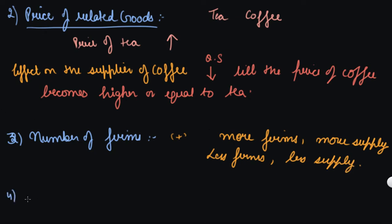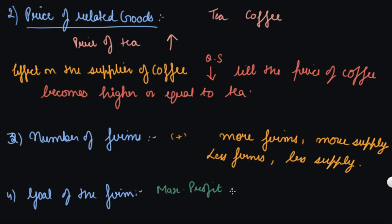The fourth determinant is the goal of the firm. If the goal of the firm is to maximize profit, more quantity of commodity will be offered at a higher price. On the other hand, if the goal is to maximize sales, more will be supplied even at the same price. If your goal is to maximize profit, you will sell more at higher prices.